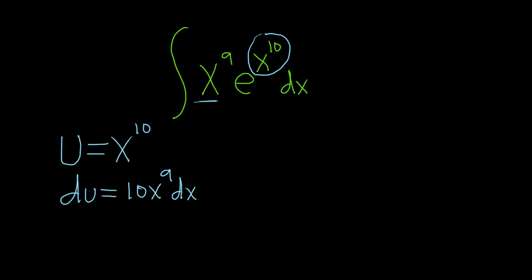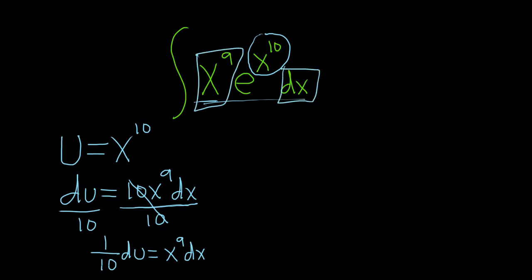Now that we're here, we have to make this look like what's in our integral. We don't have a 10 in our integral, so we can divide both sides of this by 10. So we have 1 tenth du, and that's equal to x to the ninth dx. So now we have the x to the ninth, we have the dx, so we can replace all of that with 1 tenth du.